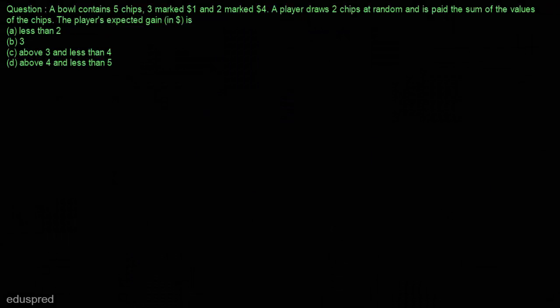In this video I'm going to solve this question. A bowl contains five chips, three marked one dollar and two marked four dollars. A player draws two chips at random and is paid the sum of the values of the chips, and we have to find the player's expected gain.